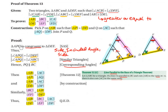Triangle APQ is congruent to triangle DEF. Congruent triangles are identical — three equal sides, three equal angles. It is congruent by SAS (Side Included Angle Side): side AP equals side DE, side AQ equals side DF, and the included angle A equals angle D. Thus, angle APQ must equal angle DEF, because they are congruent triangles, which means they are identical.